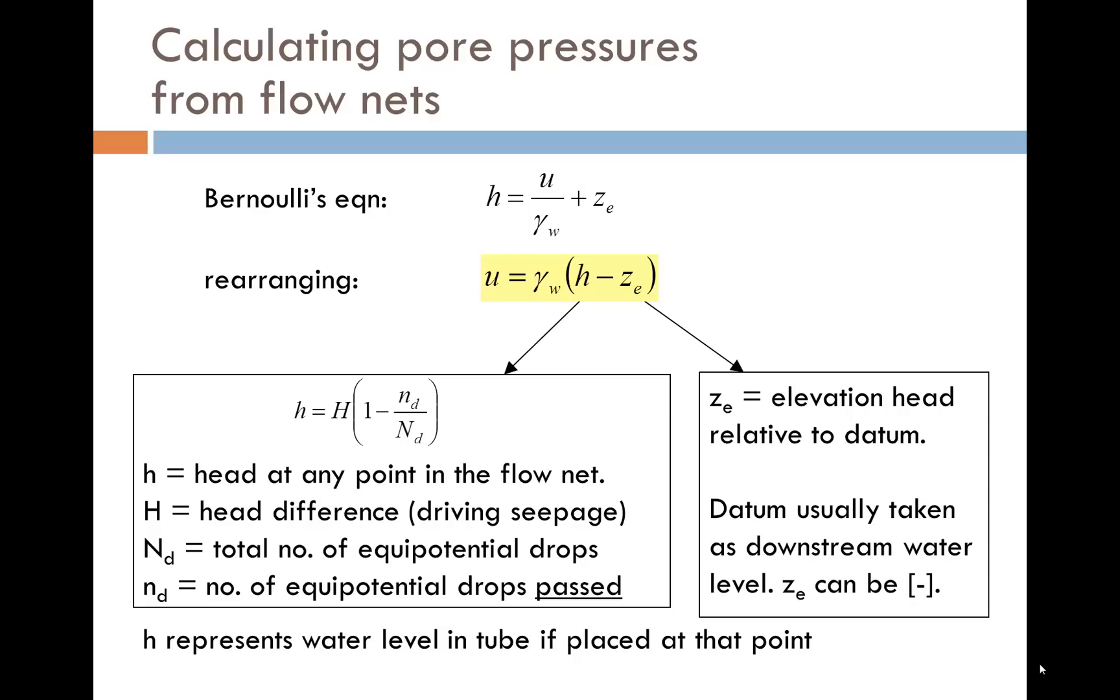We can use flow nets to calculate pore pressures simply by rearranging Bernoulli's equation to give U is equal to gamma W into H minus zE. Starting on the right, zE is the elevation head relative to a datum line. The datum is usually taken as the downstream water level, so zE can be negative. On the left, H is the head at any point in the flow net and can be calculated using the formula: little h is equal to large H into 1 minus little nD over big ND, where large H is the head difference between both sides of the wall that's driving the seepage. Large ND is the total number of equipotential drops, and little nD is the number of equipotential drops passed to reach the point of interest.